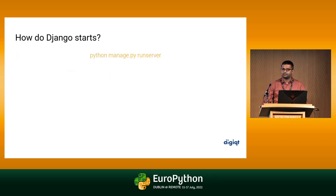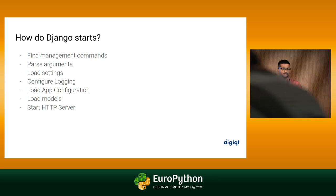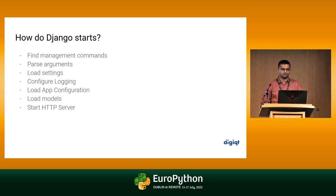Let's start with a simple question: how does Django start? Django starts with the command python manage.py runserver — that's how we start the development server. Here runserver is the management command in Django which spins the development server. These are the 360-degree view of what Django runserver does internally: it loops through all the apps, finds management commands in the Django codebase and installed apps, parses command line arguments, loads settings, configures logging, loads app configurations, loads all models, and finally starts the WSGI server.